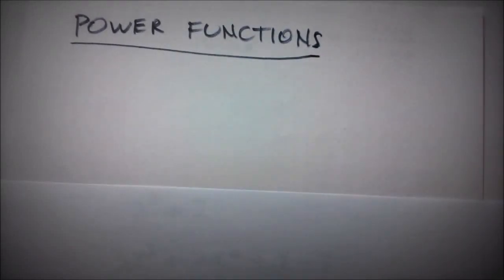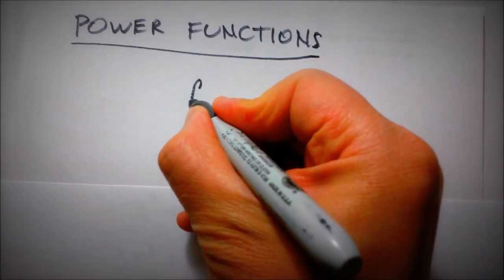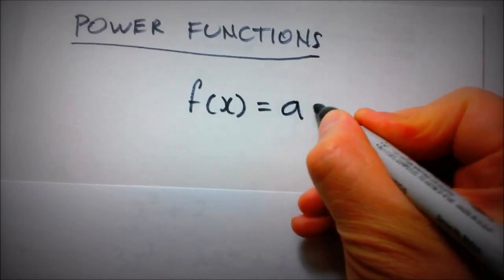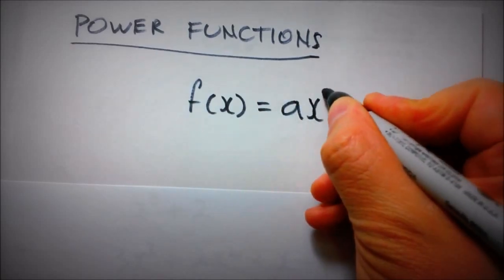Okay, today we're looking at power functions, which are essentially the simplest type of polynomial function. They have the form f(x) equals a times x to the power of n.